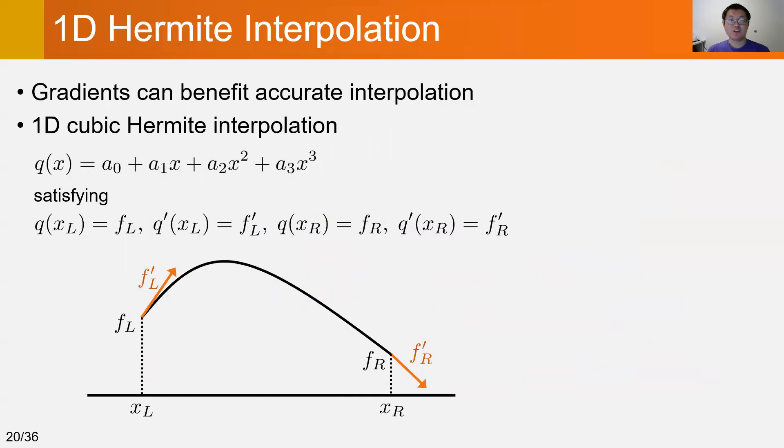We start with the 1D case. Given the values and first-order derivatives at the end points, the cubic Hermite interpolation will find a cubic polynomial satisfying constraints at the end points.